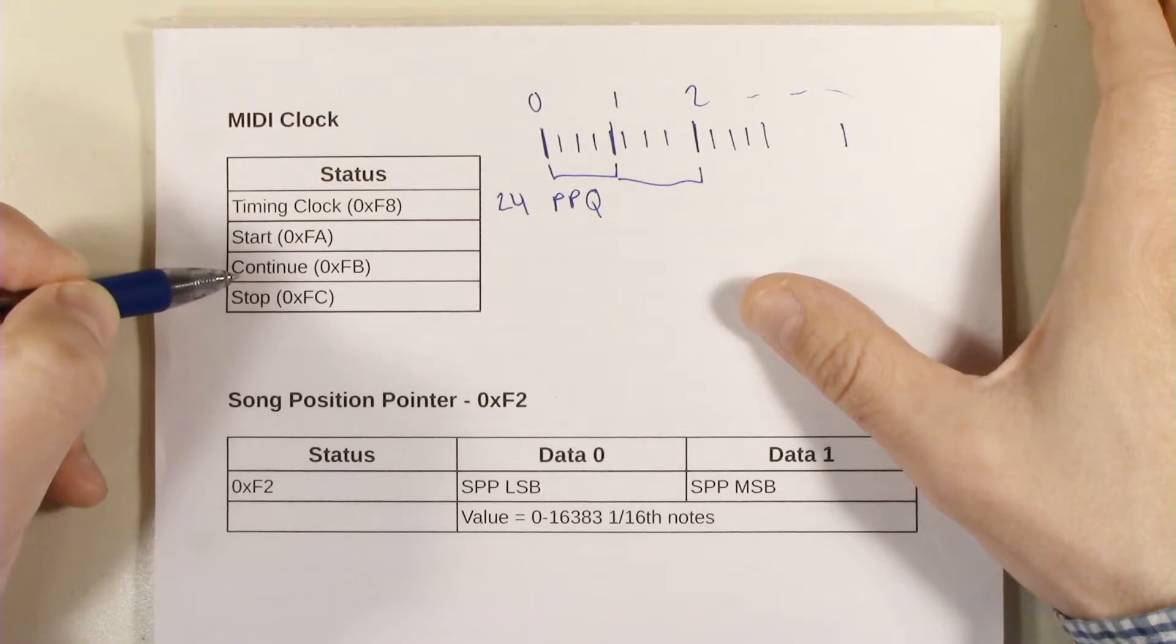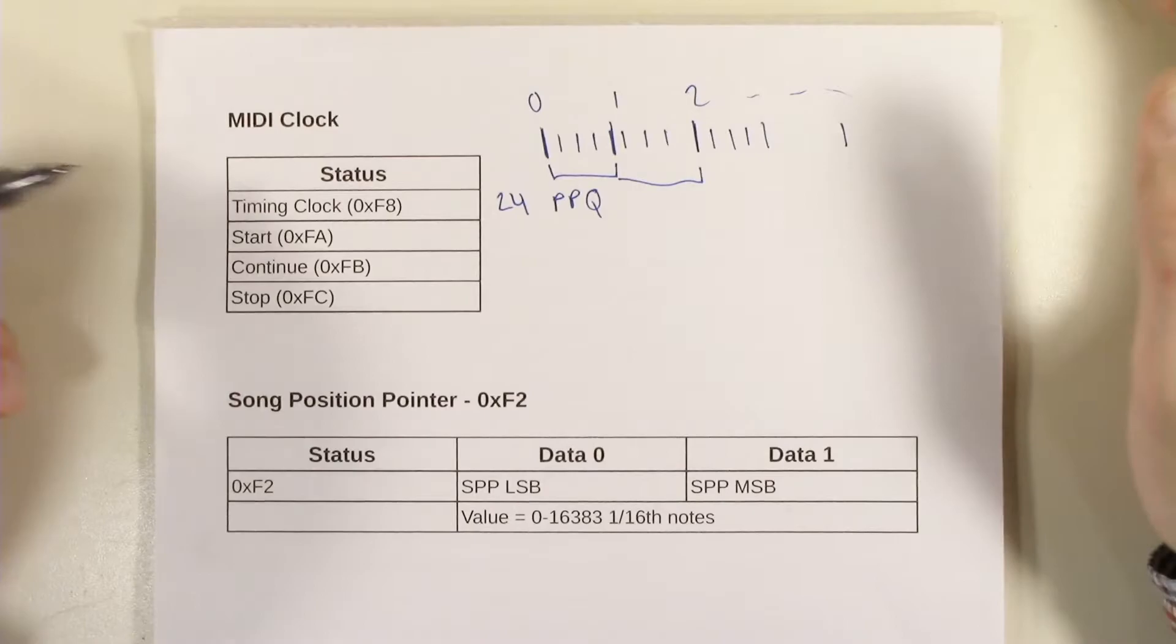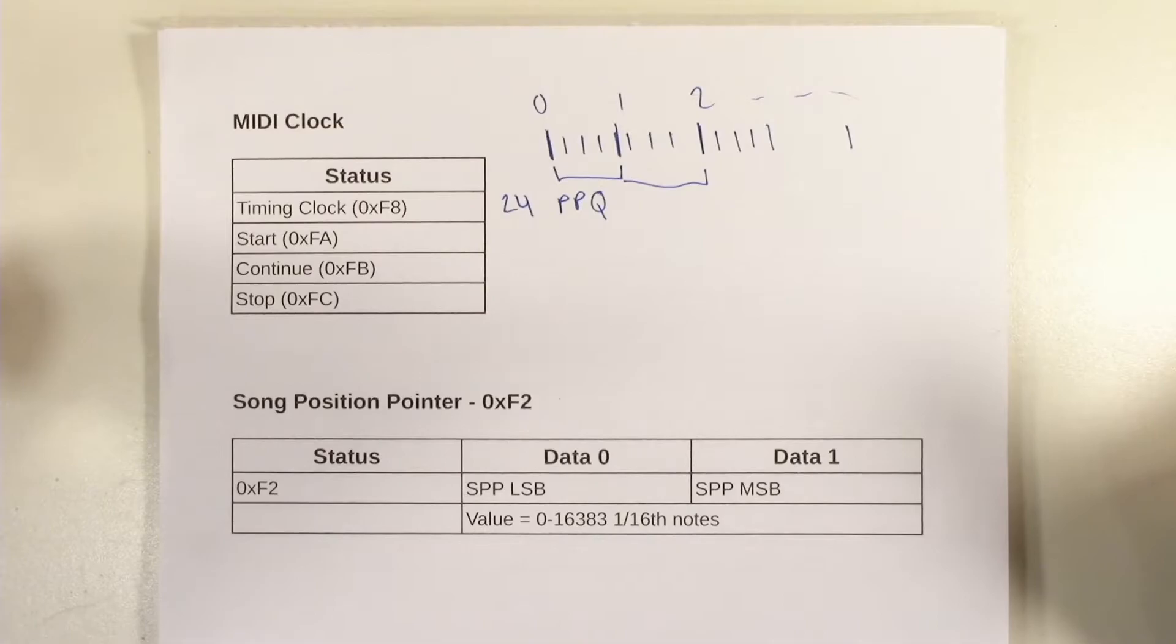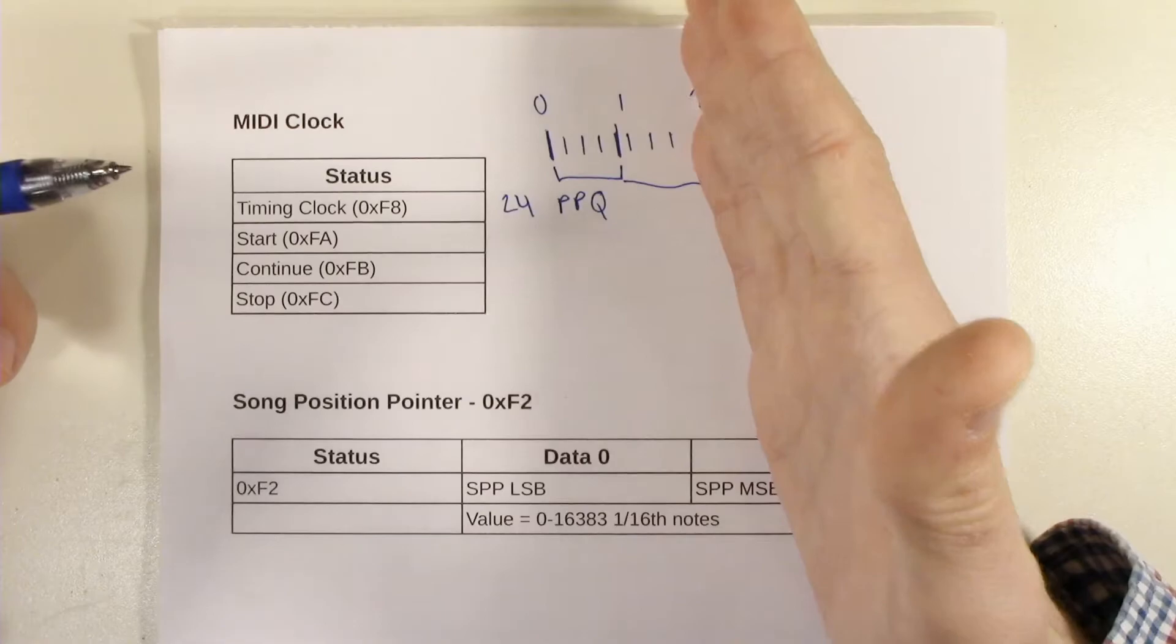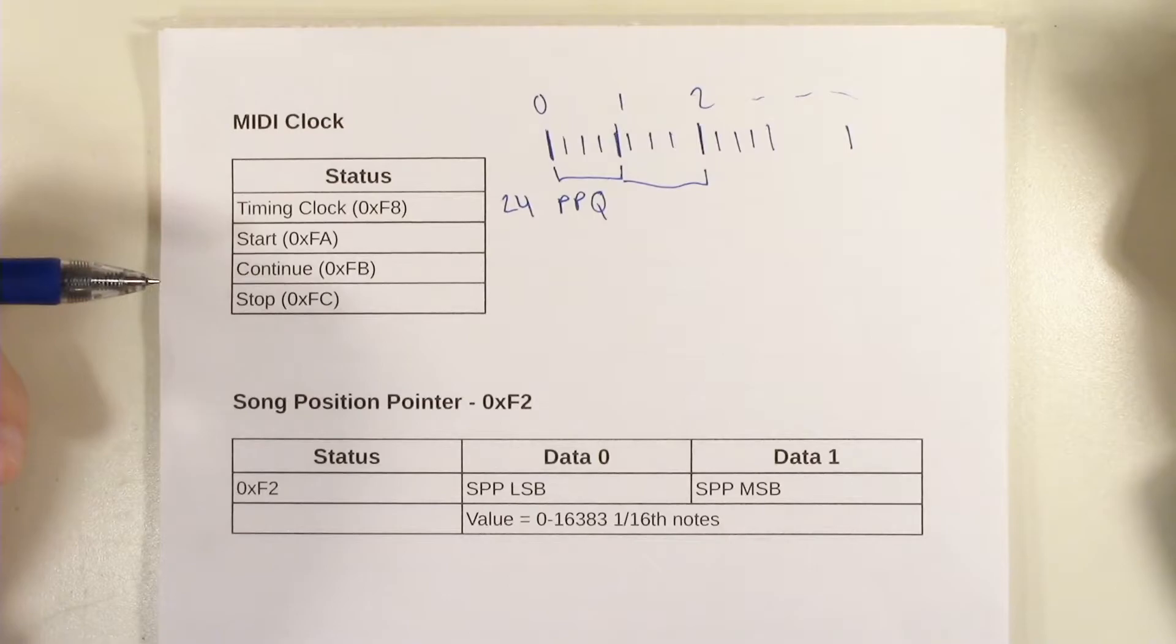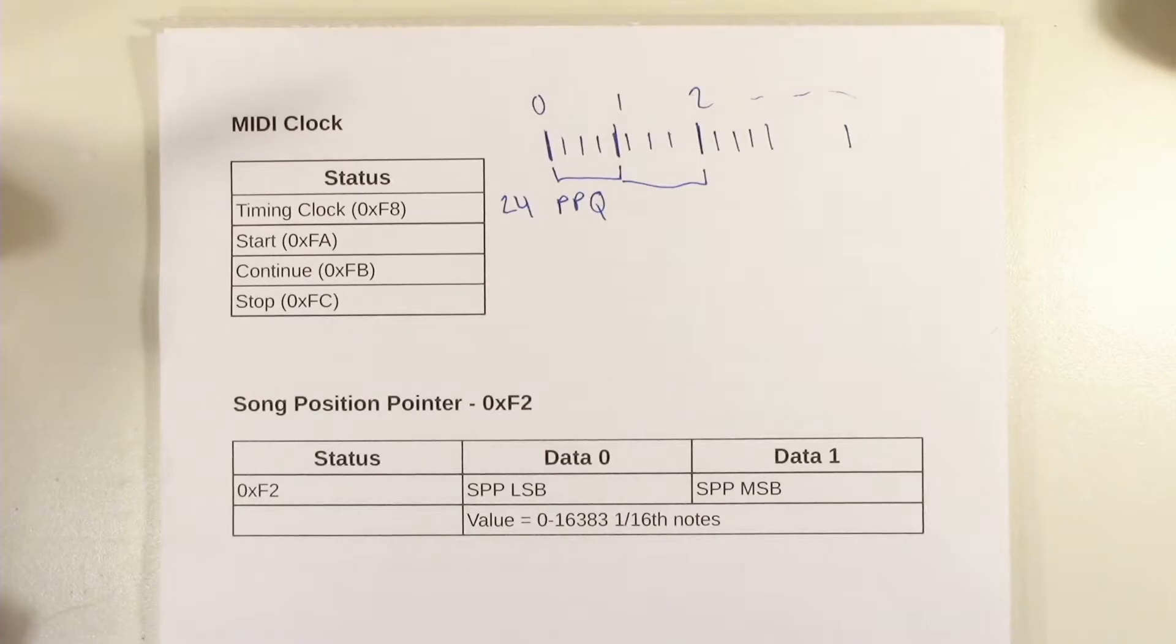And then continue is like start except it doesn't change the position. So continue would be like pause and unpause. Start would be like rewind to the start. The names here don't, you know, they're kind of like not what we would normally think of when we're thinking of actual equipment but that's the function that they have. So stop would be kind of like, stop is more like pause really. Stop doesn't, you know, stop everything and it just stops playing and the position is retained. So that's like pause. Continue is like unpause basically. And then start is like continue except before it continues it resets the playback position.